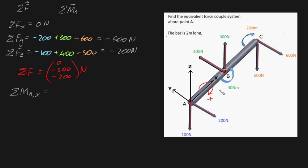Each of these forces don't produce any torques about the x axis because they pass through the x axis, which means the only torques of interest are the 40 Newton-meter torque, which is negative, and the 20 Newton-meter torque, which is positive. So that's minus 40 plus 20, which is minus 20 Newton meters.